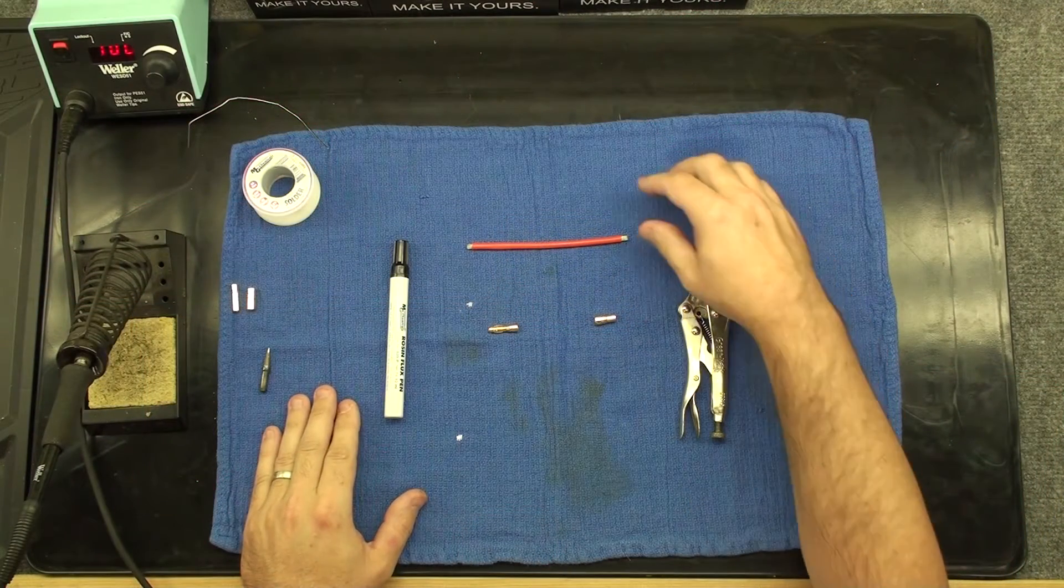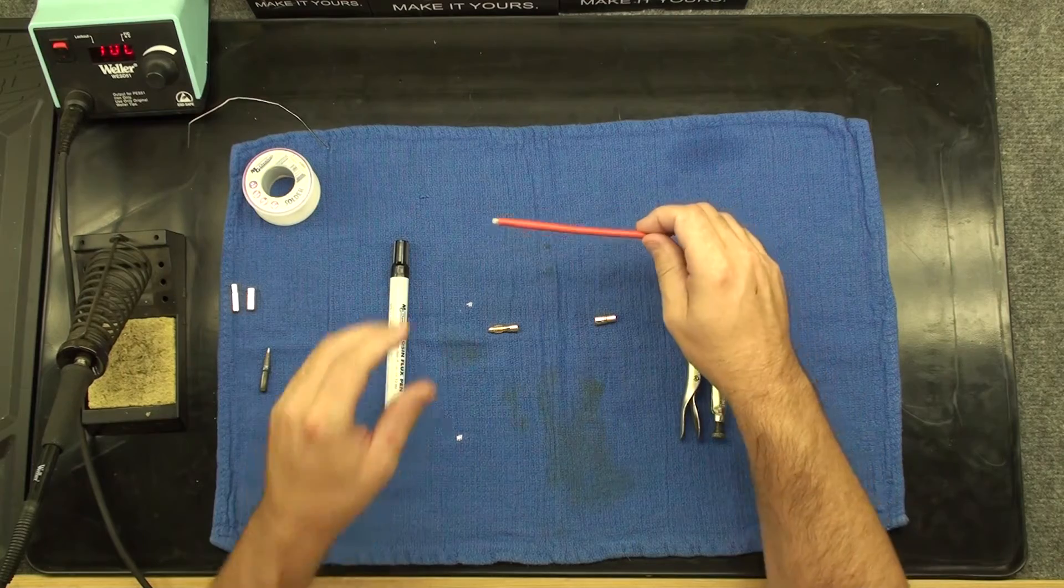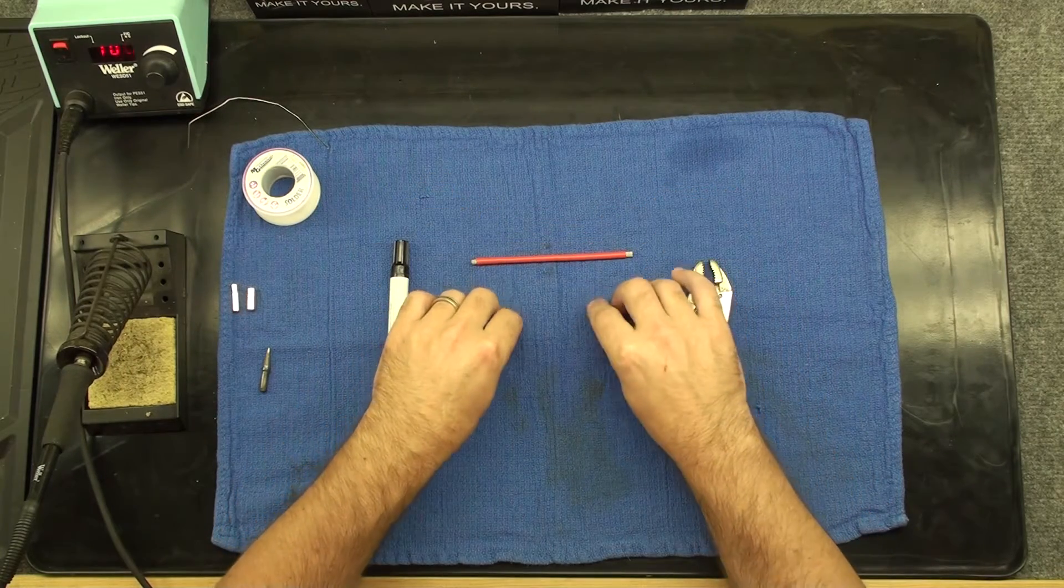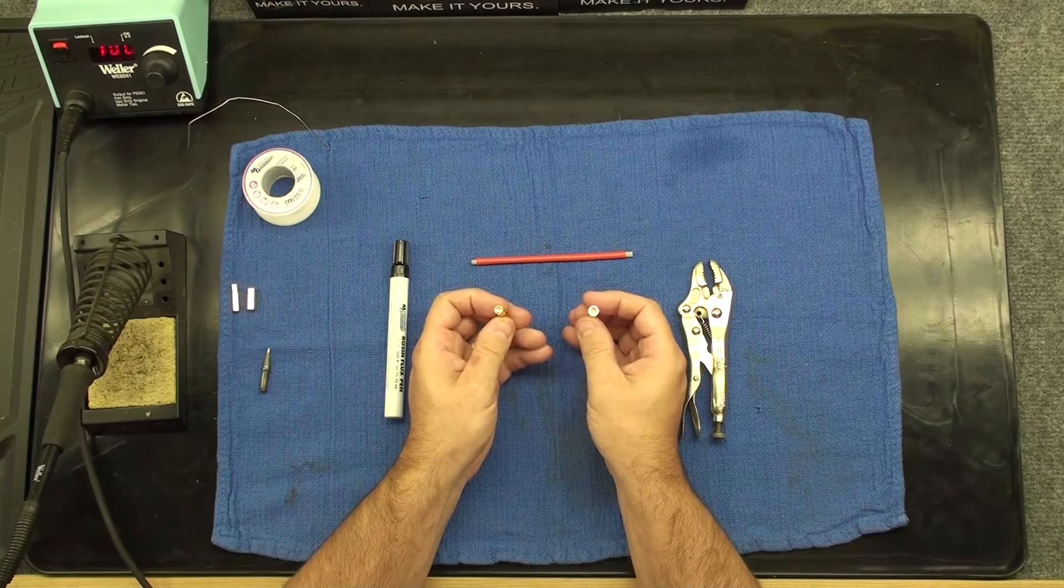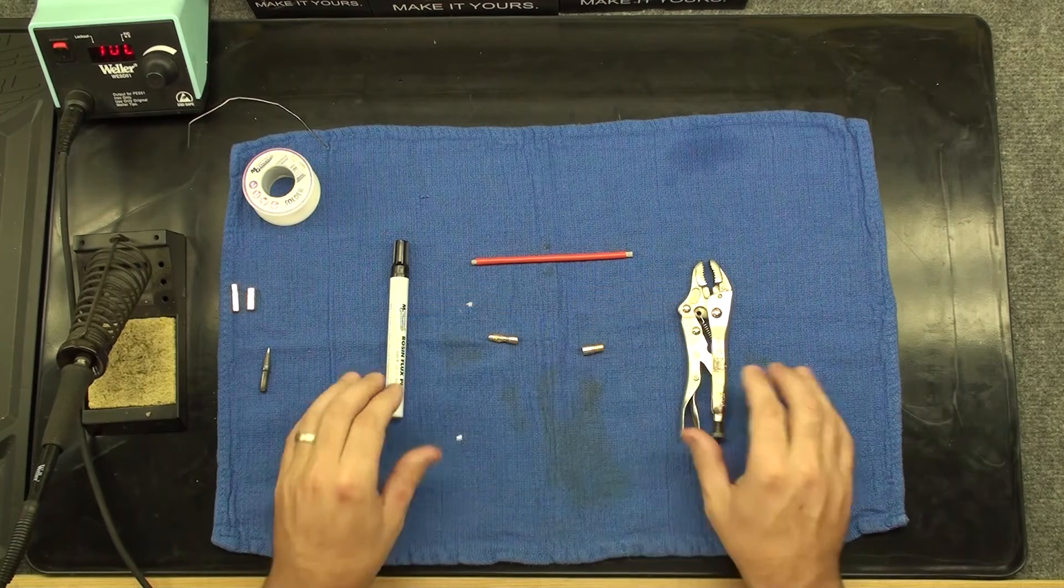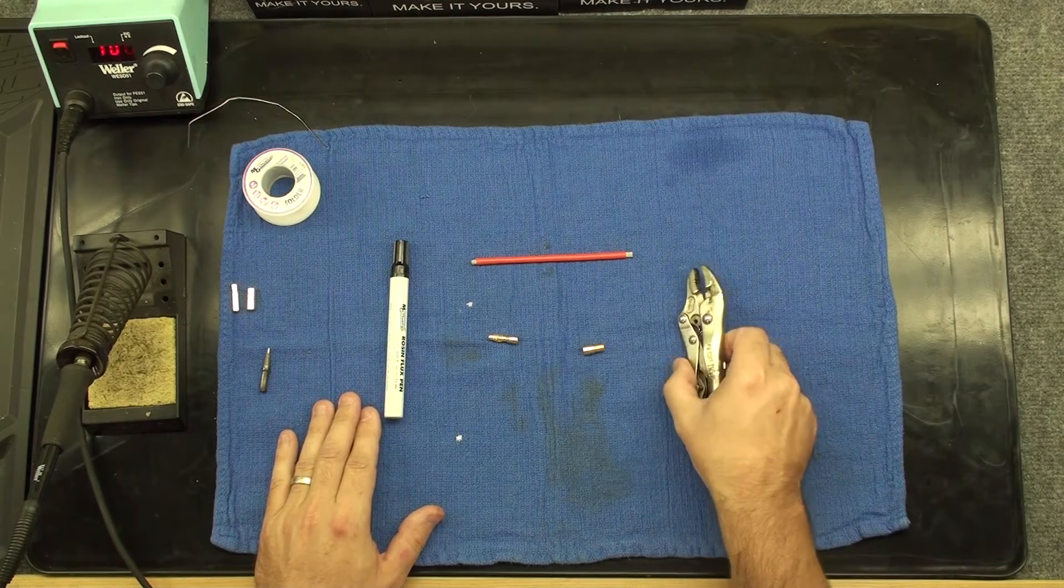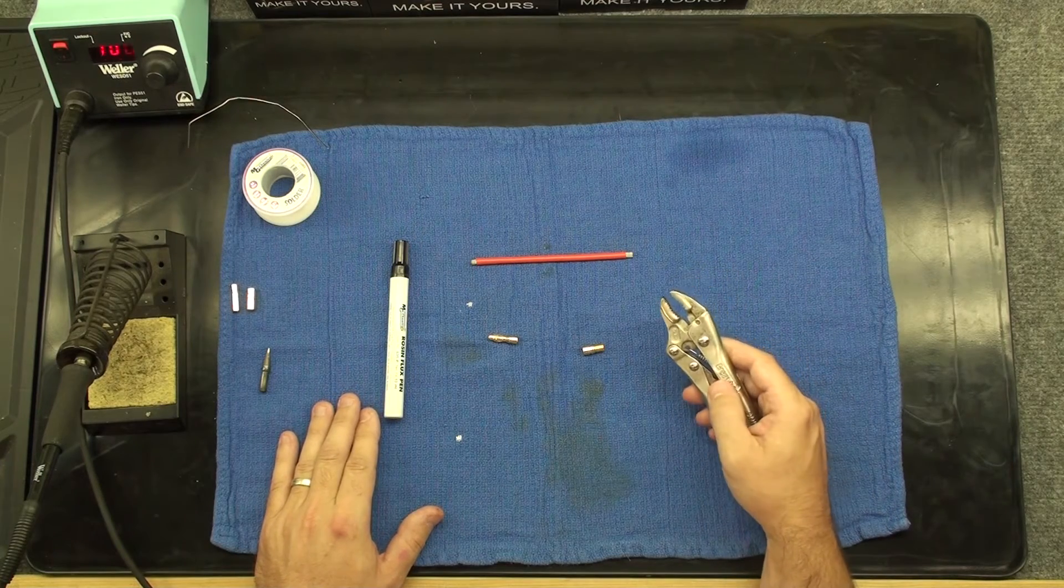Now we move on to soldering a wire to a bullet connector. I have a large 12 gauge wire here to demonstrate. I also have two different bullet connectors with different sized ports to be soldered to. If you don't have a nice solder jig, you can simply use a pair of channel locks to hold the bullet connector. This is very simple to use.